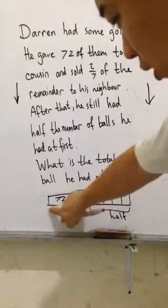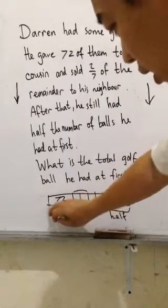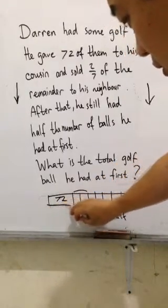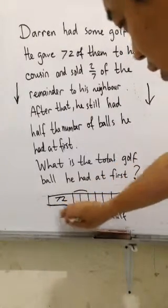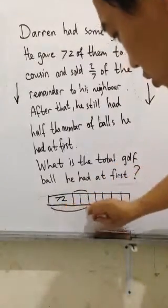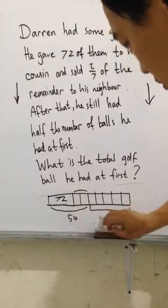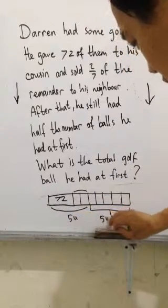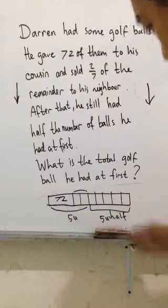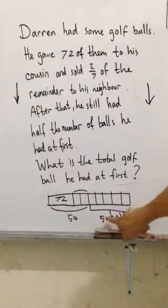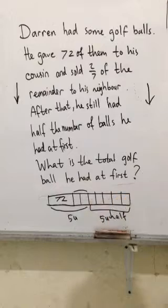That means this other half is 5 units, and this one is also 5 units — same as this one — because this represents one half.